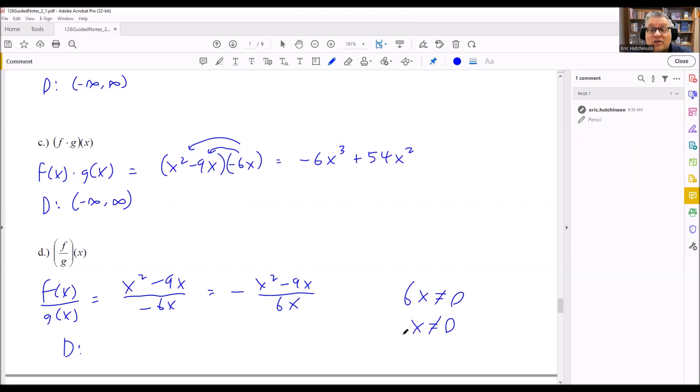That means that 0 cannot be included in our domain. So we're going to include every number except for 0. So the way we're going to do that is negative infinity to 0, and then from 0 to infinity. And so every number is okay except for 0 is the only one we can't include.